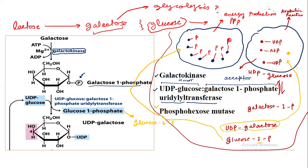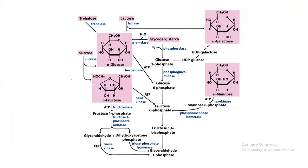So through this process, galactose has effectively attracted one glucose molecule toward energy production, while itself moving toward the anabolic pool. This summary shows how these sugars enter the process of glycolysis — all monosaccharides fueling into the pathway. This is the feeders pathway for glycolysis. I hope this lecture is clear; if you have any questions, you can ask in the comment section. Thank you.